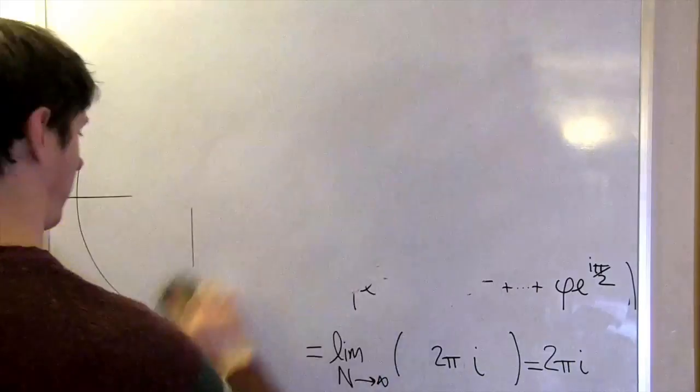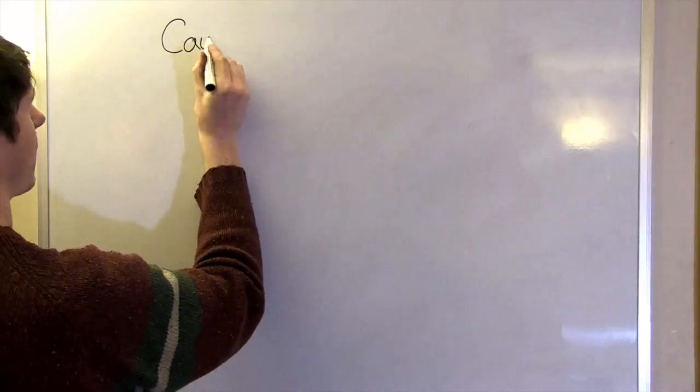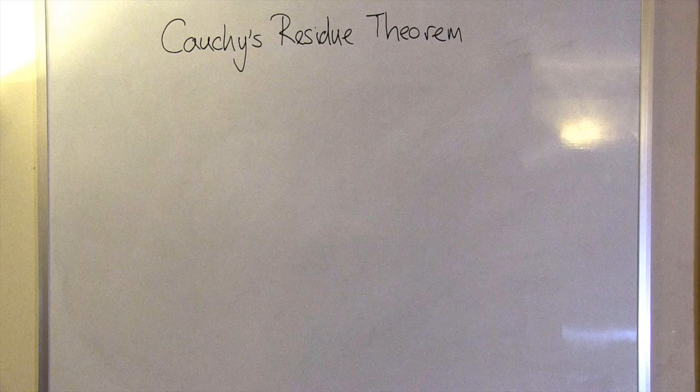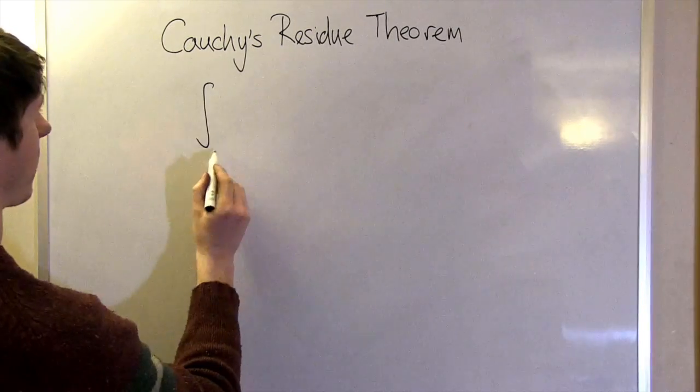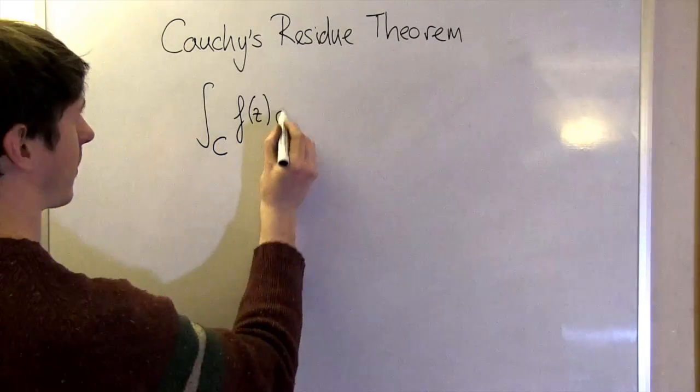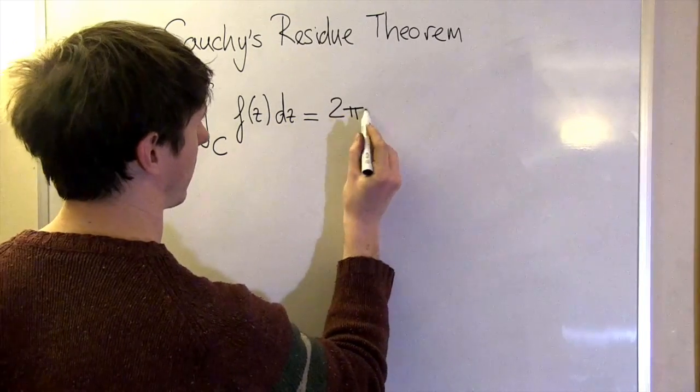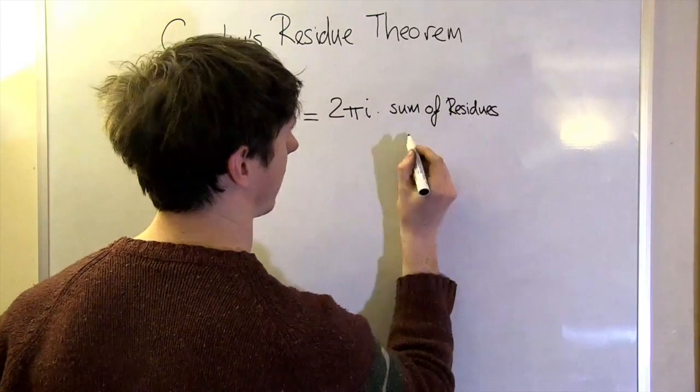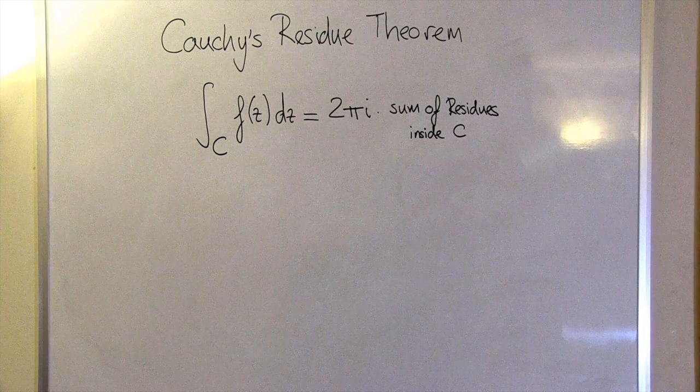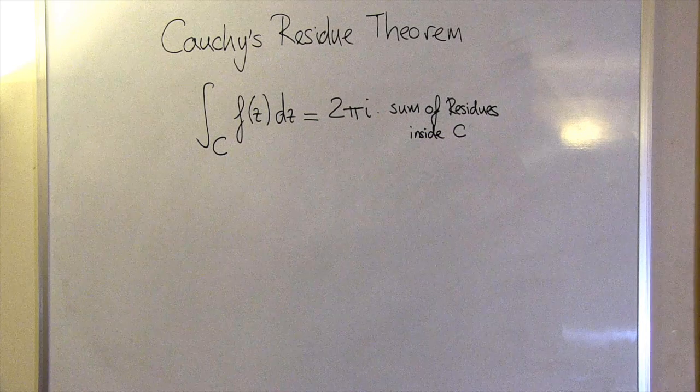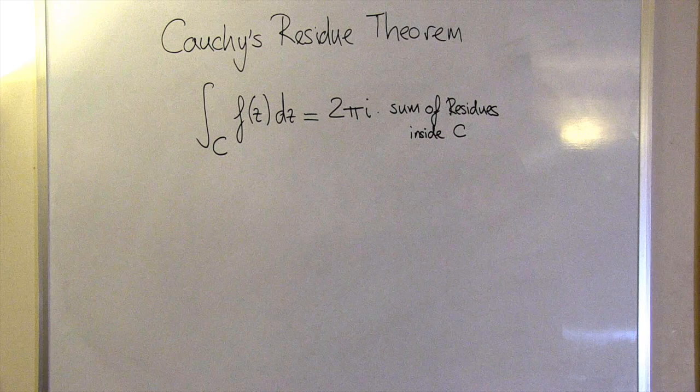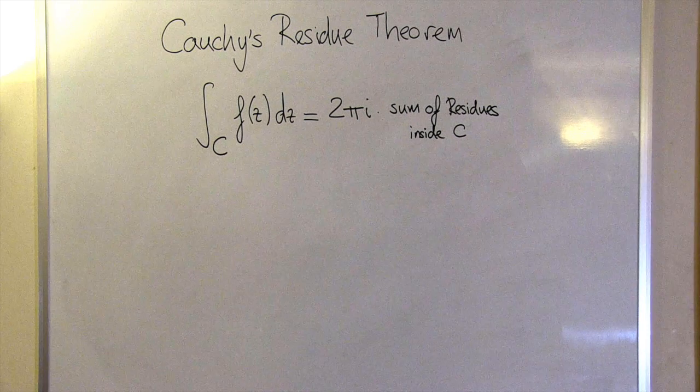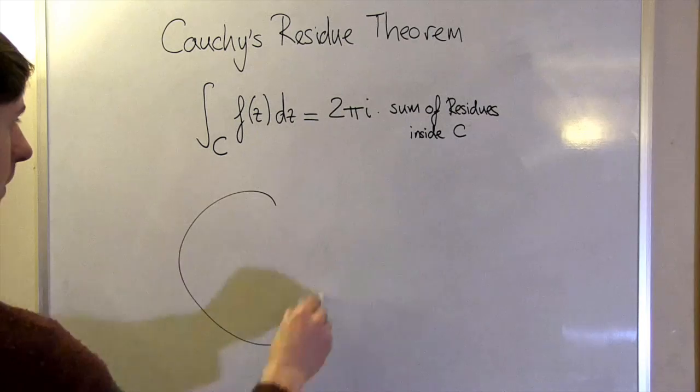What we've just done is prove a special case of something called Cauchy's Residue Theorem. It's actually a really deep piece of mathematics. The full theorem says that the integral of an analytic function f around a closed contour C is equal to 2 pi i times the sum of the residues enclosed by that contour. Okay, this residue stuff sounds a bit unsanitary—what is it? Well, if a function ever goes off to plus or minus infinity, the residue tells you something about how exactly it gets there.